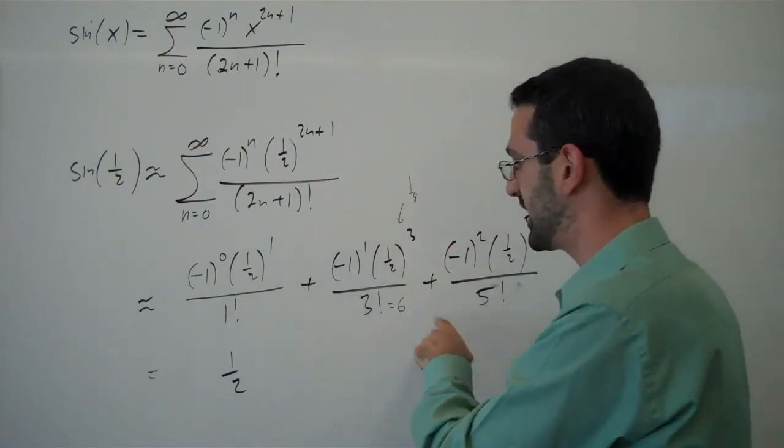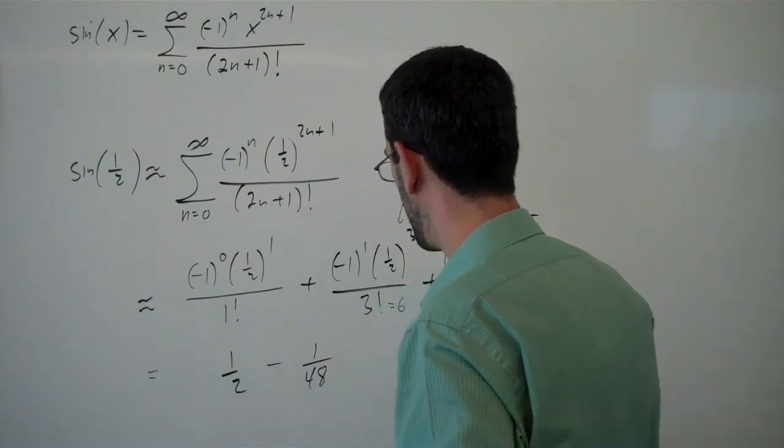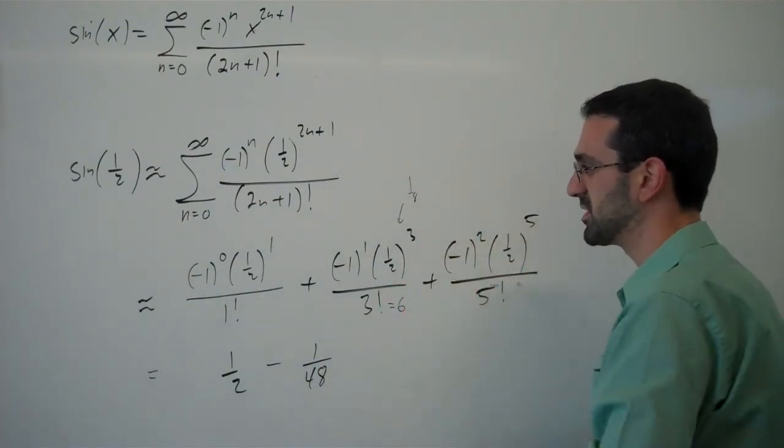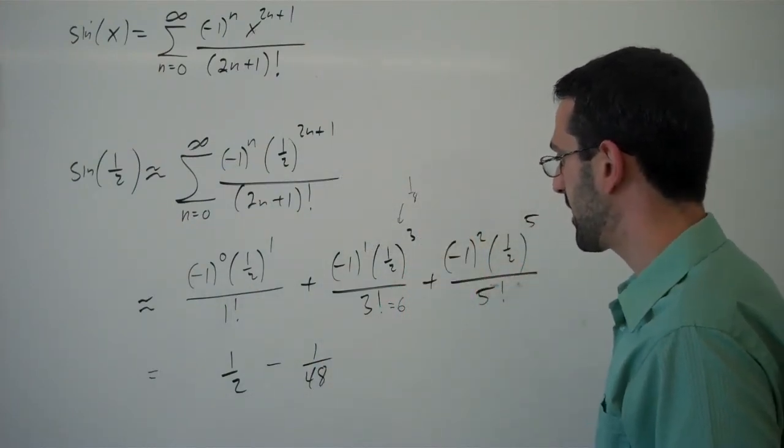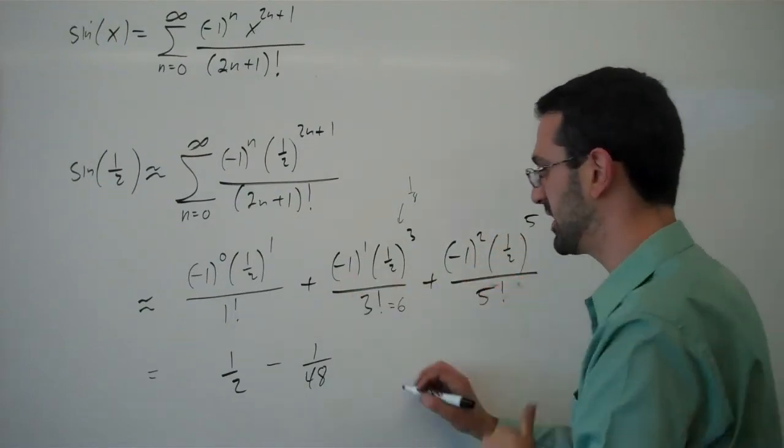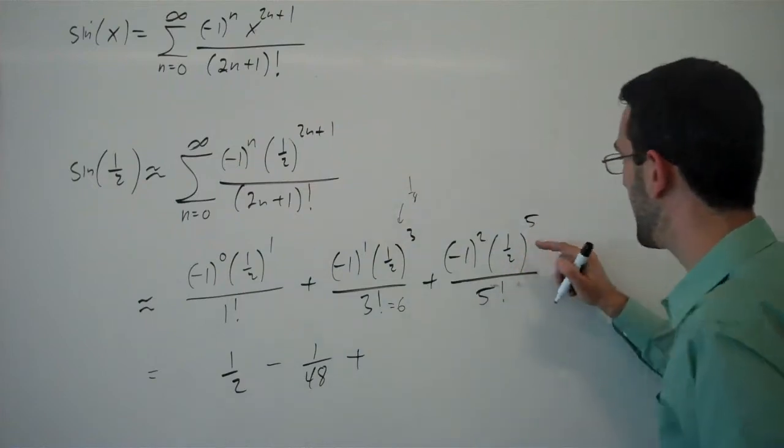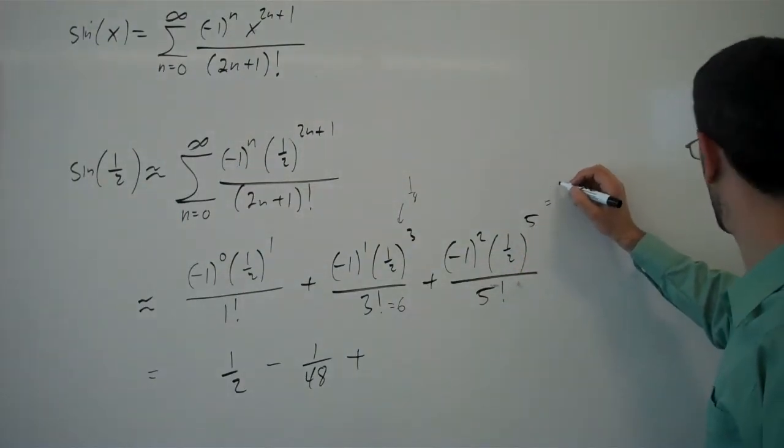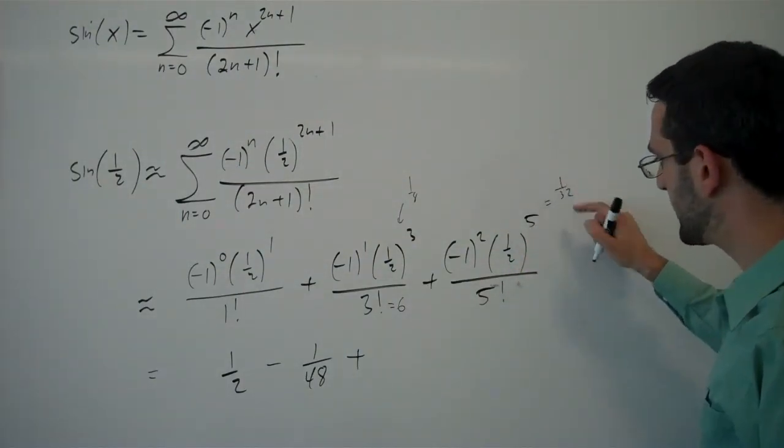So bringing that in, we've got a negative 1 over 48. I get the 6 times the 8 there with the negative. Here, negative 1 squared will be positive.